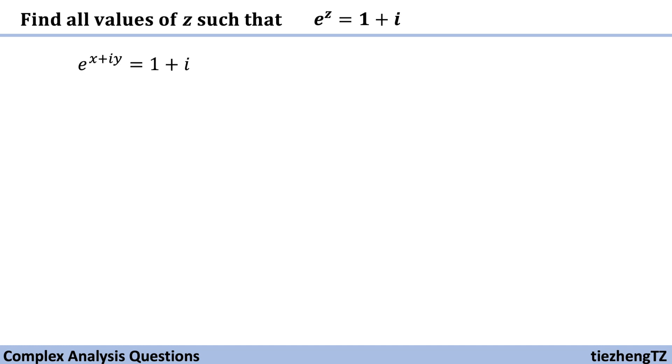So first, let's change the equation into e to the power of x plus iy equals 1 plus i, because z is x plus iy.